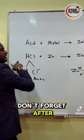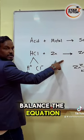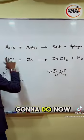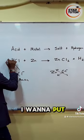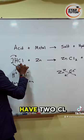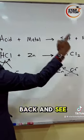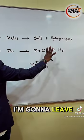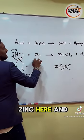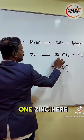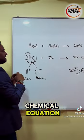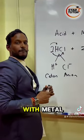After you write the chemical equation, don't forget you have to balance the equation. I got one H here and two H there, so I am going to put a 2 in front of the HCl to balance it. Now I have two H and two Cl. I go back and check the Cl — I got two on each side, so it is balanced. Then check zinc: I got one zinc here and one zinc there, so it is balanced. Just leave it as that. This is your chemical equation for acid reacting with metal.